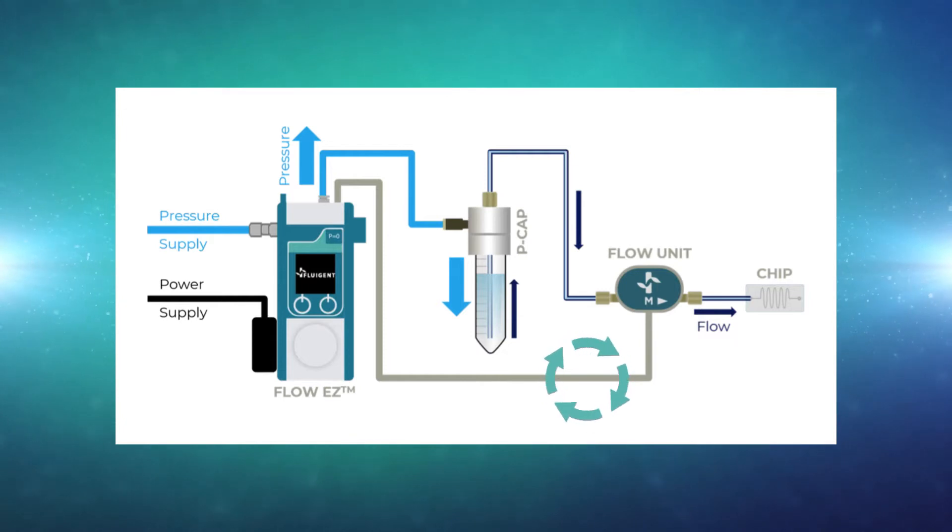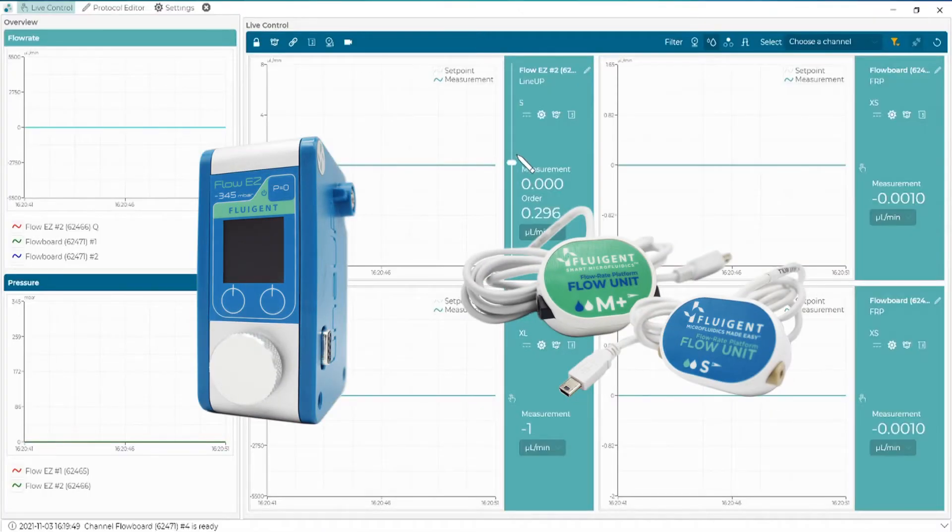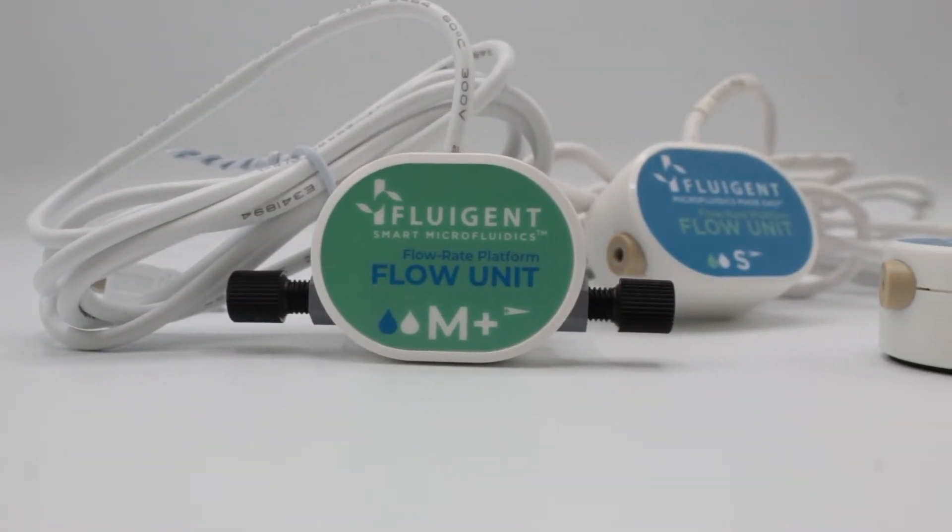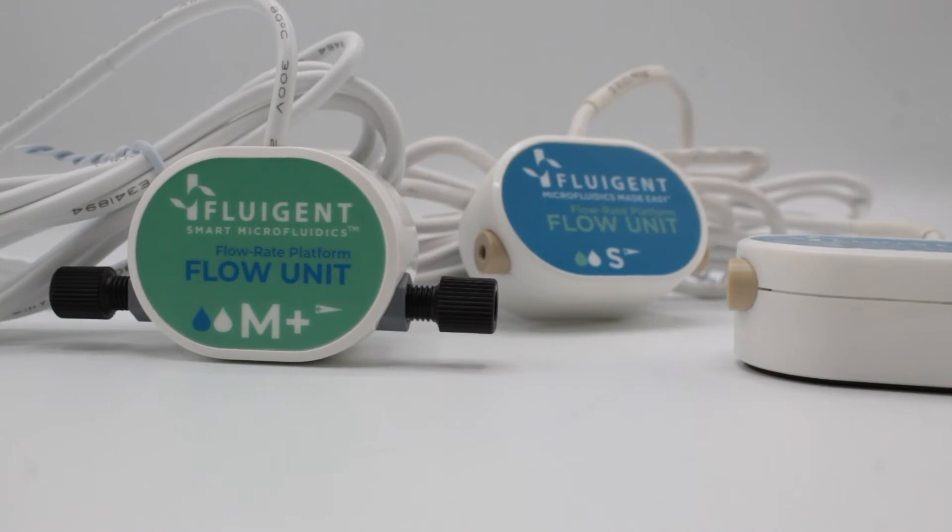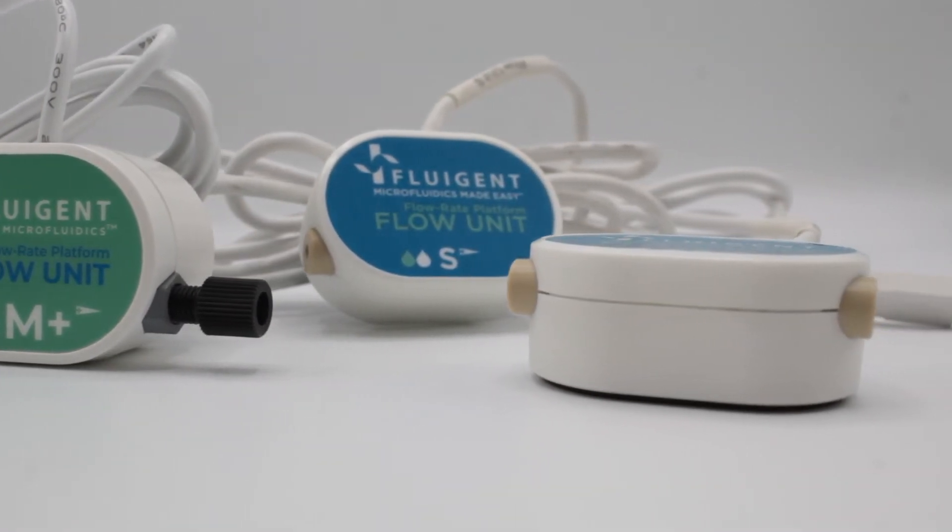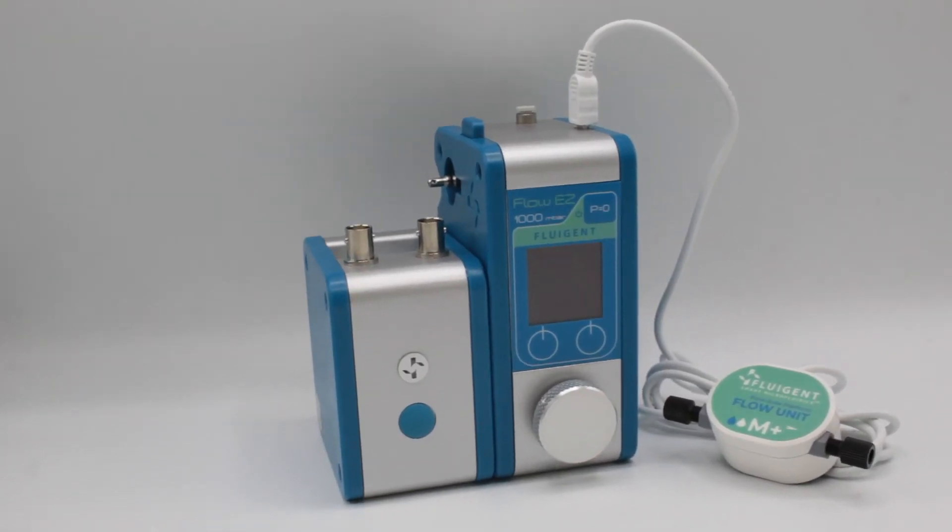The pressure controllers, sensors, and software sold by Fluigent are able to deliver stable and precise flow rates with very low settling times. Our solution, the Flow Units, are bidirectional flow rate sensors compatible for standalone use with the Lineup controllers or with any other microfluidic control system.